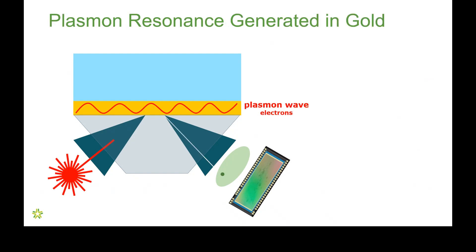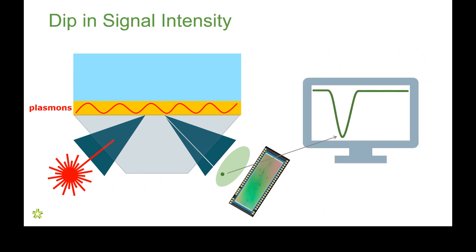But what actually happens is that at one particular angle, the light is converted into a plasmon wave, a wave of electrons that resonates through that gold layer. So, the angle at which this happens is not reflected to the detector. Instead, it produces a dark spot across that range of angles. And that dark spot, when you plot it as intensity versus angle, produces a dip.